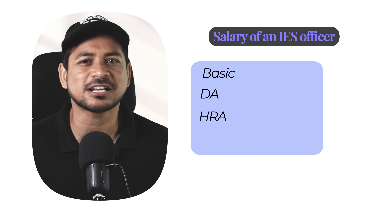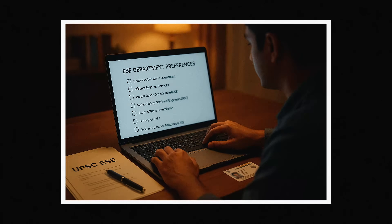The basic, the DA, the HRA, the special allowances — all of it. ESE 2026 notifications are already out, and very soon you will be given choices for filling the department preferences. It's very important that you know how your salary gets affected by the departments. Watch this video till the end to get more details. A quick note before I start: the rules of salary keep on changing. The figures I'm going to give you today are from 2025 and may change in future, but the structure remains more or less the same.